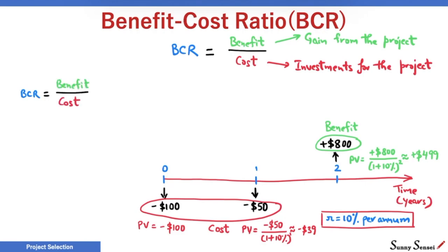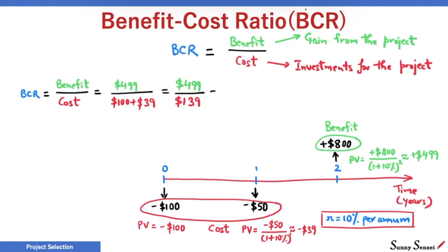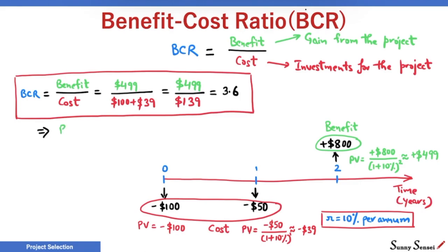Benefit is the sum of present values of all positive cash flows. Cost is $100 plus $39, or $139. Notice that we have ignored the negative sign — absolute values are considered for both benefit and cost. The BCR is 3.6. This means benefit is 3.6 times the cost. For every $1 of cost or investment, the benefit is $3.60.